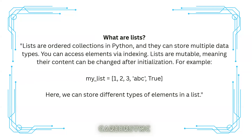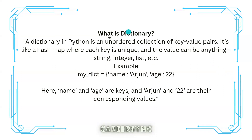The third question was: what are lists? Lists are ordered collections in Python and they can store multiple data types. You can access elements by indexing. Lists are mutable, meaning their content can be changed after initialization. For example: my_list = [1, 2, 3, 'abc', True]. The next question was: what is a dictionary? A dictionary in Python is an unordered collection of key-value pairs, like a hash map, where each key is unique and the value can be a string, integer, list, etc.